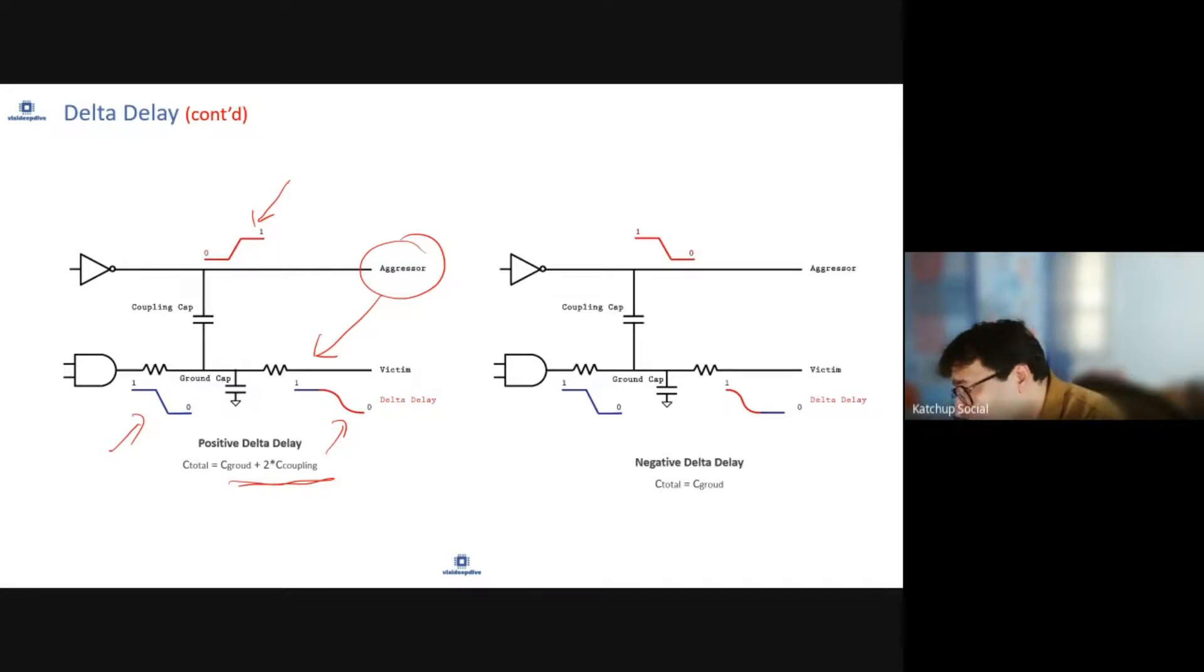Now suppose the signal was falling—aggressor—but the victim also was falling. In that case, the delta delay is there, but it has become faster. The delay has reduced because the signal transition will now be faster because of this. So it may impact, making the whole timing not able to meet. Delay can be both in positive side—it can increase or it can decrease—and that's one impact of crosstalk.